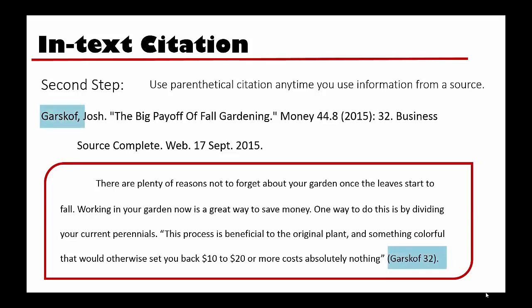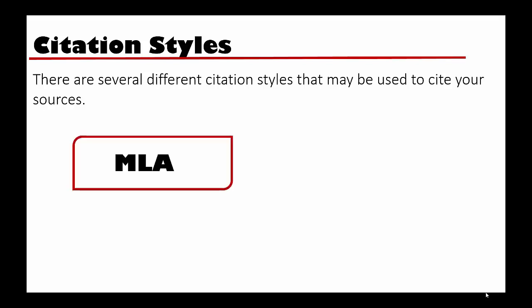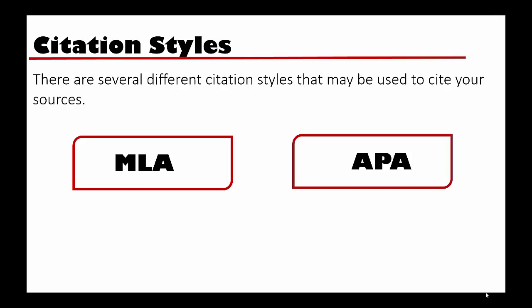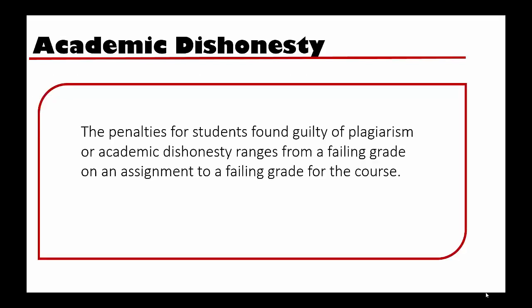Usually, this means that the in-text citation starts with the same element as the citation from your Works Cited page. There are multiple citation styles that will outline the rules of how you cite your sources. Most courses will require you to use either MLA or APA style. You can find guides for using both of these styles in the library or on the library's website. One last thing to keep in mind are the penalties for academic dishonesty. Students found committing plagiarism can face consequences that range from a failing grade for the assignment to a failing grade for the course.